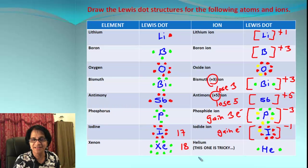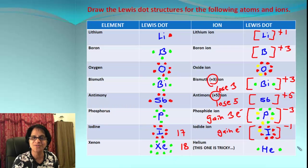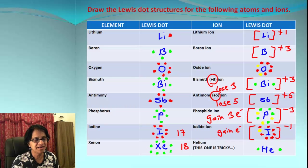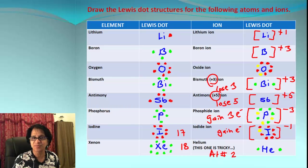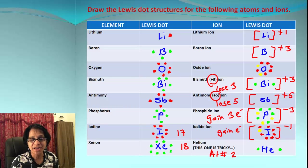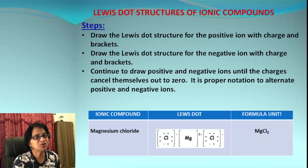Xenon is in group 18, which has eight valence electrons, so we show all eight around xenon. It is stable and won't form an ion. Helium is a little tricky — it is in period one with an atomic number of two, meaning it only has two electrons. It is still considered a noble gas. This is the only exception where a noble gas does not have eight electrons but has two electrons in the very first orbit.